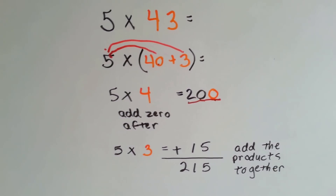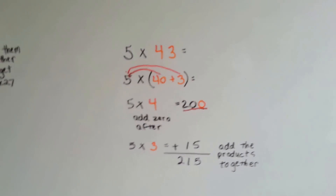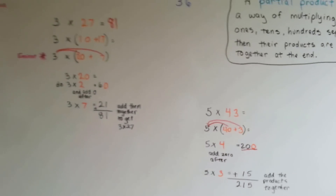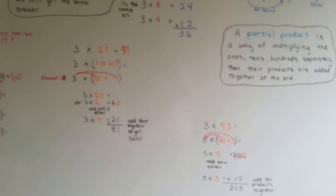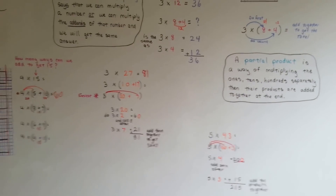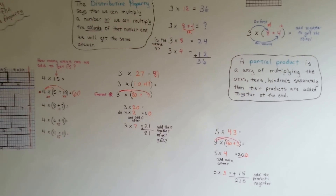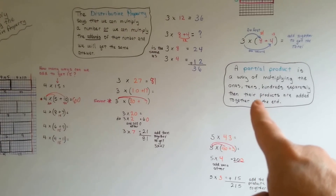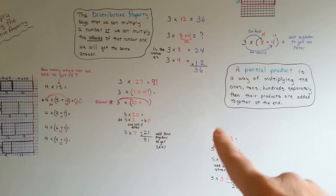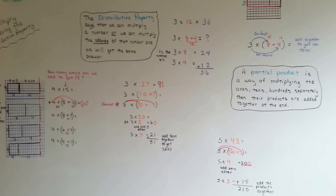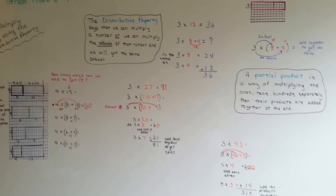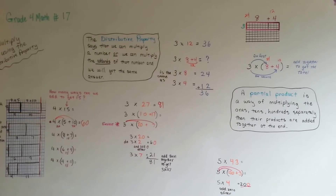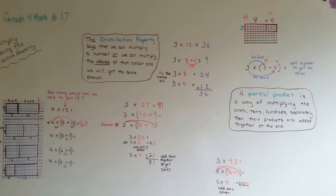We add the products together. Isn't that a lot easier? So if you remember to take the 0 off and put it back on again at the end of the problem, then that will make it easy on you. It's a lot easier to break it up and do partial products by multiplying hundreds, tens, ones separately, and then adding them all up together at the end. And that is how you can multiply using the distributive property.